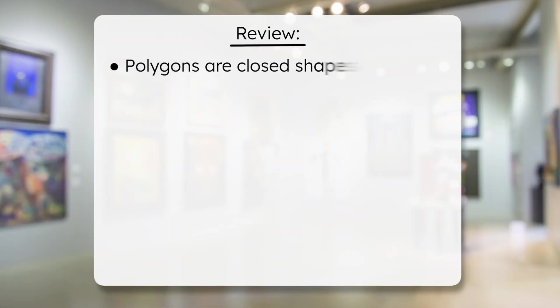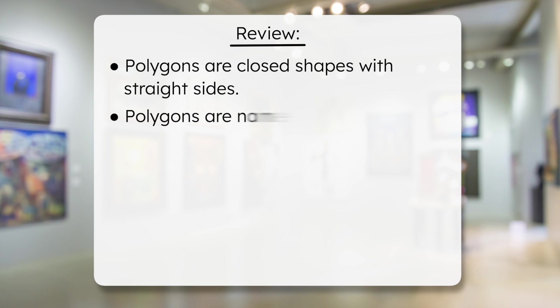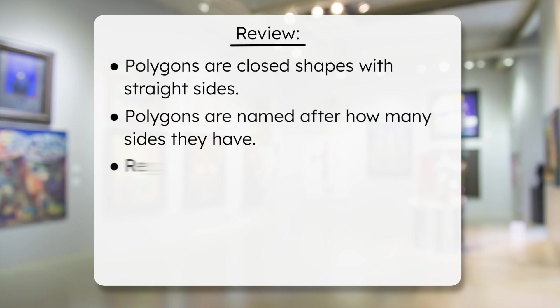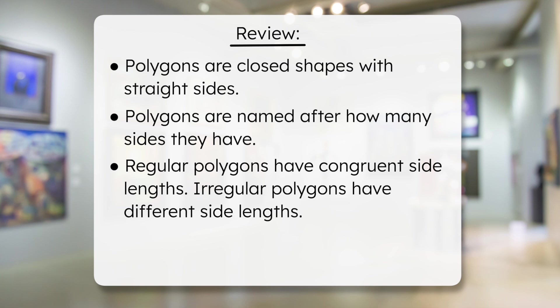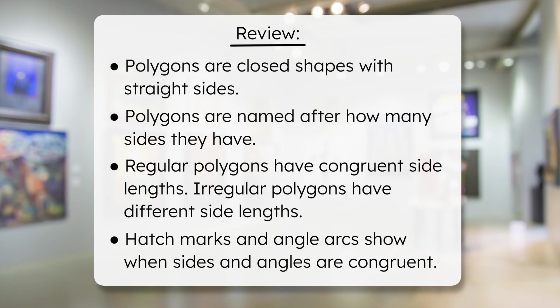So, what did we learn today, besides the fact that you don't have to be a famous artist to create your own unique artwork? Now you know that polygons are closed shapes with straight sides, named after how many sides they have. Regular polygons have congruent side lengths, and irregular polygons have different side lengths. Hatchmarks and angle arcs are used to show when sides and angles are congruent. Be sure to complete the practice questions and extension activities that go with this lesson. And remember — in math, as in life, every effort adds to your success. I'll see you next time!